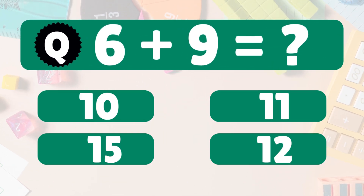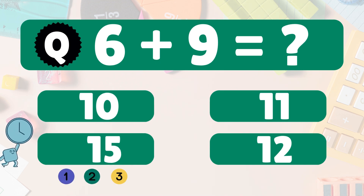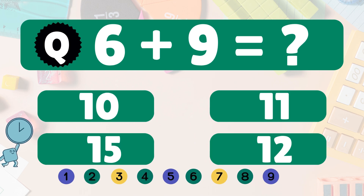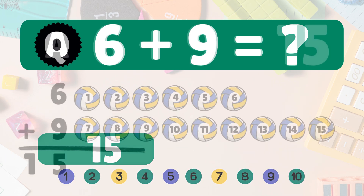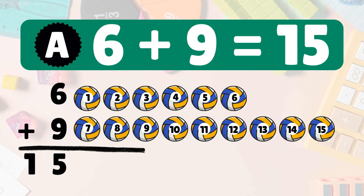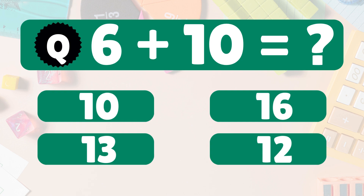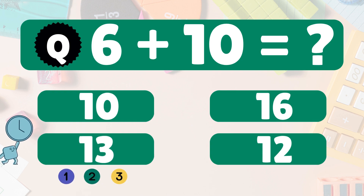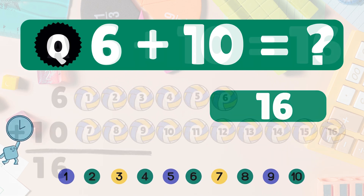6 plus 9 equals? Let's count together. 1, 2, 3, 4, 5, 6, 7, 8, 9, 10, 11, 12, 13, 14, 15. You've got this. 6 plus 9 equals 15. Awesome.